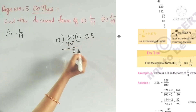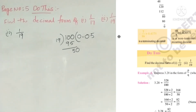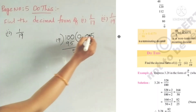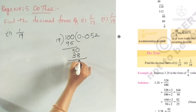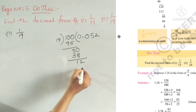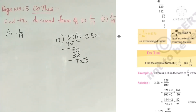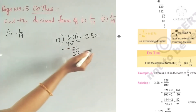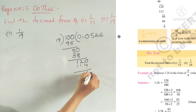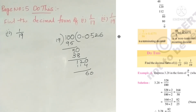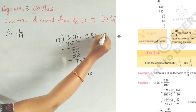Since the decimal point is there, we can put 0. 19 threes are 57. Then 19 twos are 38. 10 minus 8 is 2, 4 minus 3 is 1, remainder 12. We add 0. 19 sixes are 114. We add 0 again. 19 threes are 57. So 3 will come.